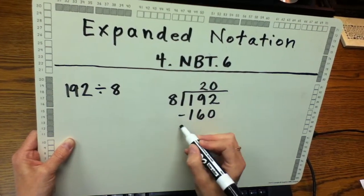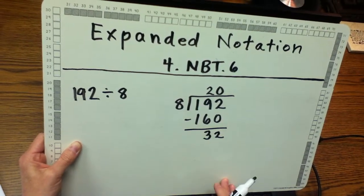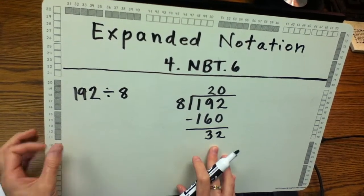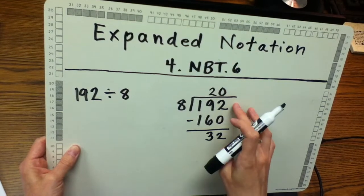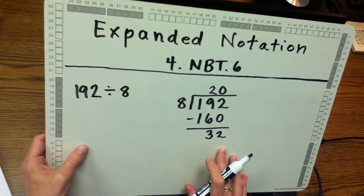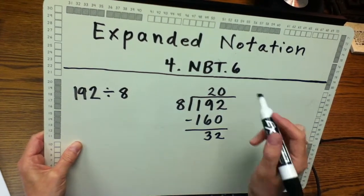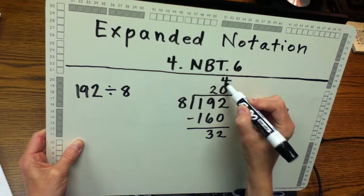Then I subtract and end up with the difference of 32. Since I still have 32, which is part of my initial dividend that I need to take care of, I know that 4 times 8 is 32. So I'm going to write the 4 above the 20.